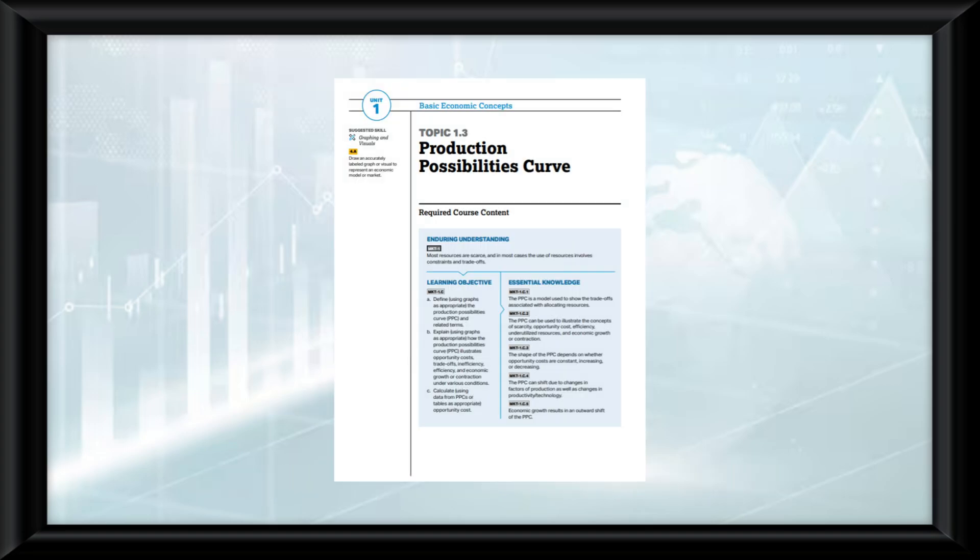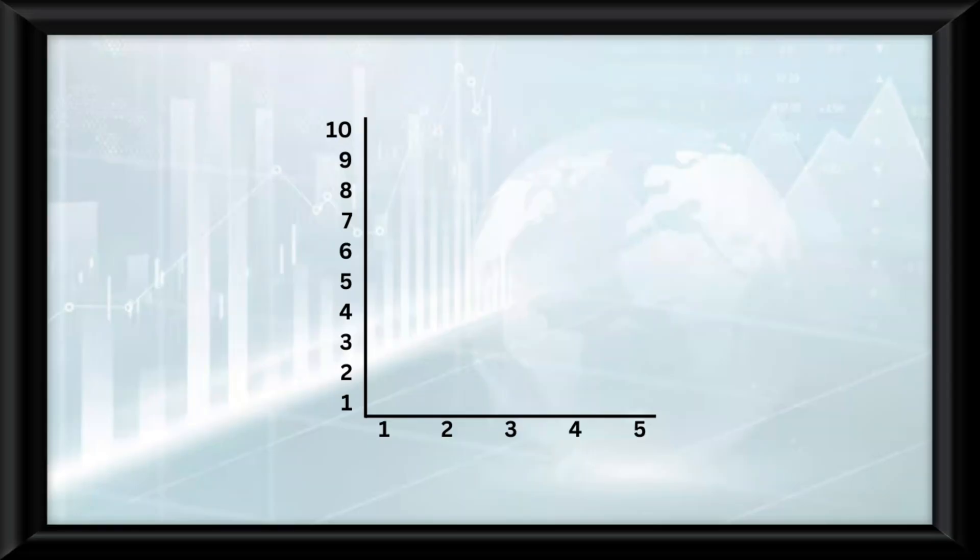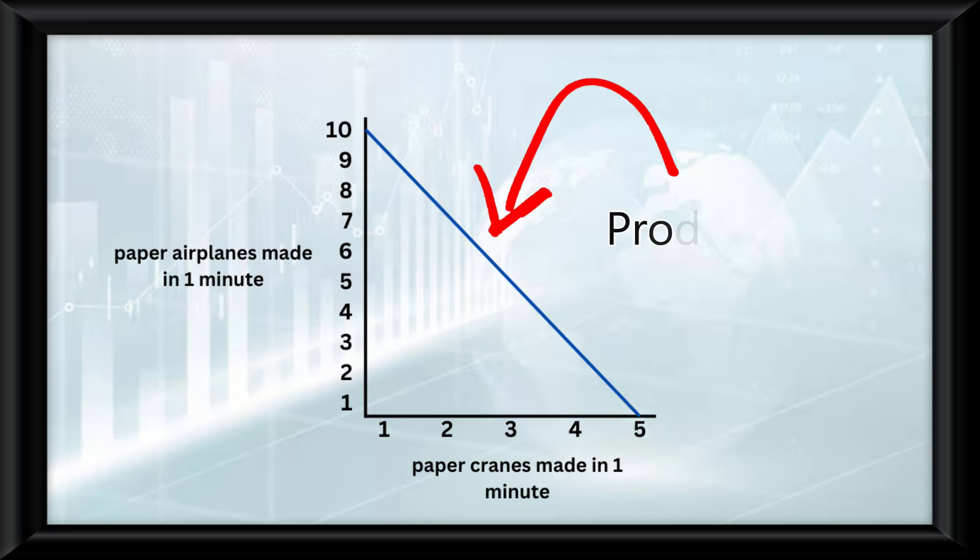Topic 1.3 is all about production possibility curves in economics. So as you can see here, we have a graph. The graph shows me trying my hardest, showing the amount of paper airplanes I can make in a minute, being 10, and the amount of paper cranes I can make in a minute, 5. The line you see on the graph creates a production possibility curve. This curve is used to show the trade-offs associated with allocating resources.